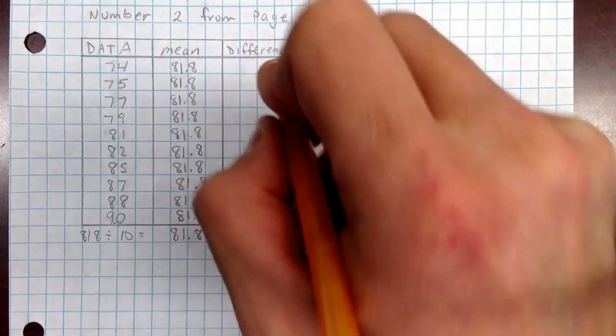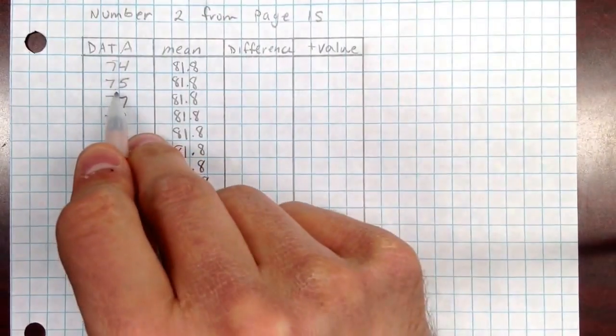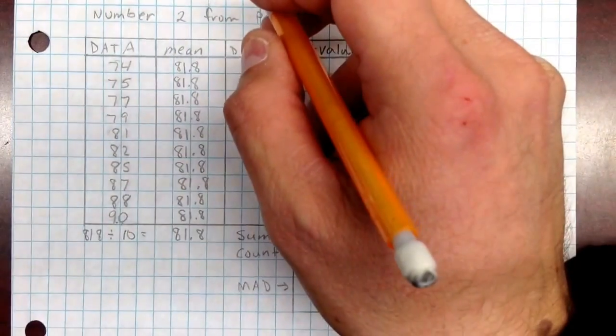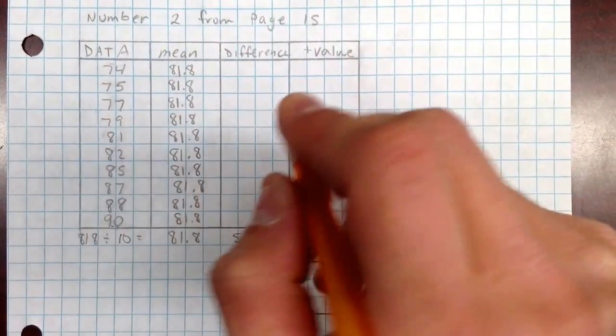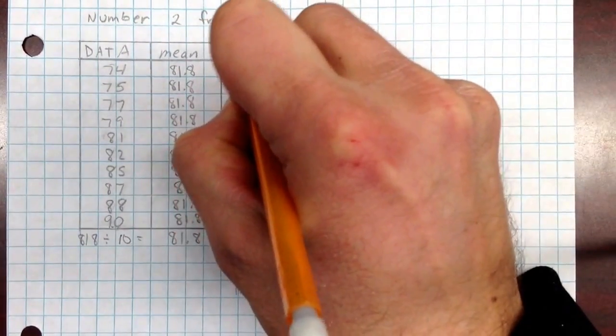So let's take 74 minus 81.8 and then I'll fill these in now. You should again be taking this one minus that one. Try not just follow what I'm doing and copy this down. You should be actually calculating it and making sure you're understanding it at each step.